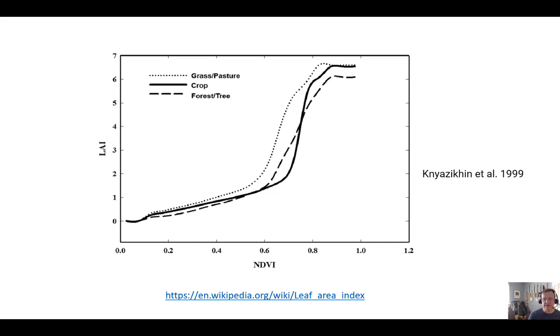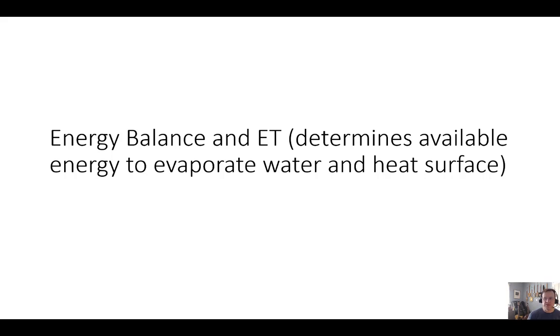Remote sensing and using the optical properties of the whole surface now, not just the leaf, but the entire surface, is a useful tool. The final thing we want to talk about is energy balance and ET. This is probably what we'll talk about the most because we want to move toward calculating evapotranspiration from different surfaces. Optical properties of the surface are really important when we do this as well.